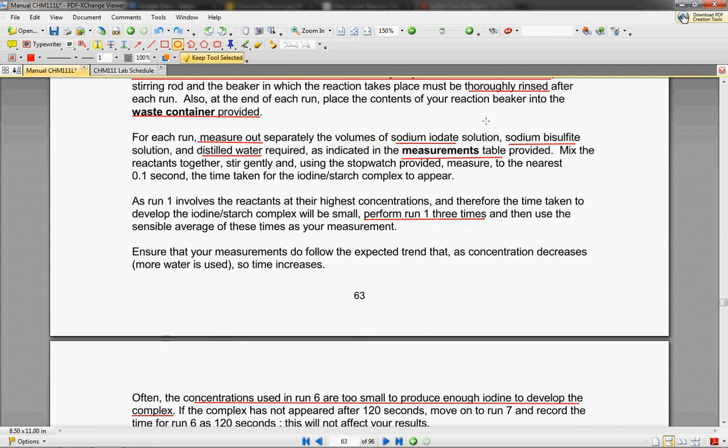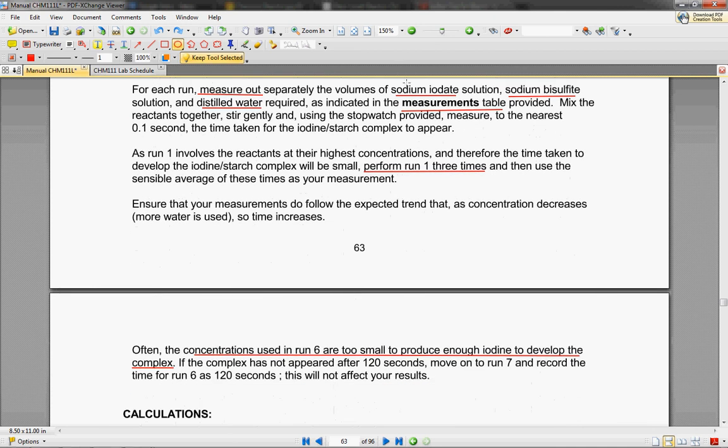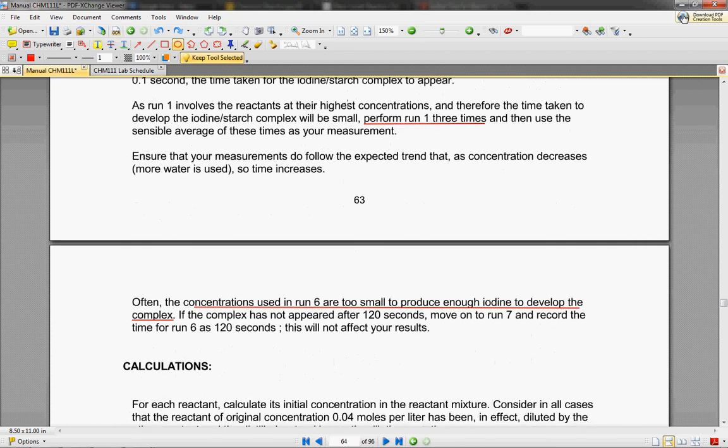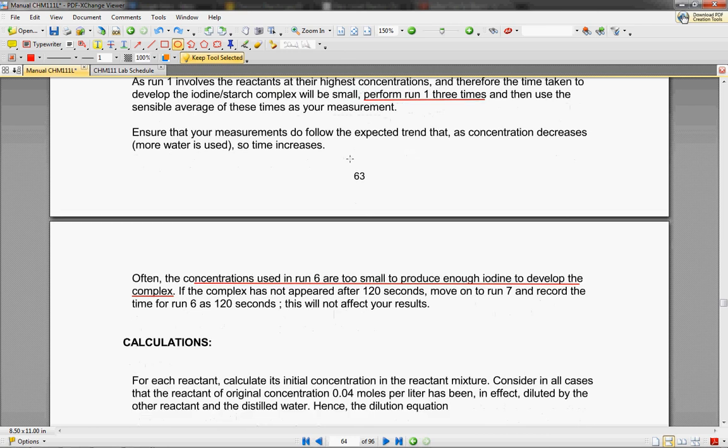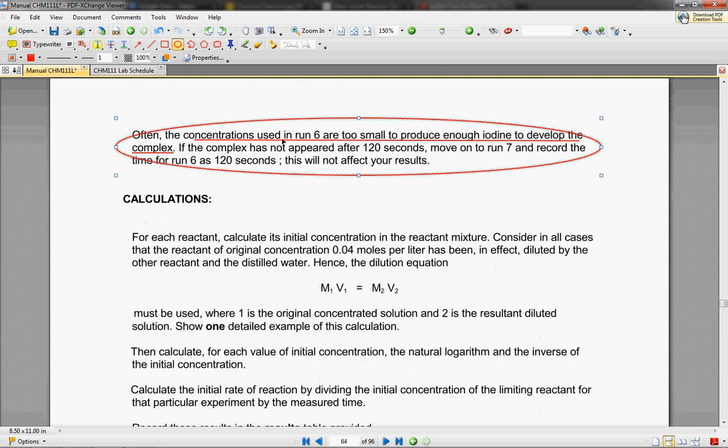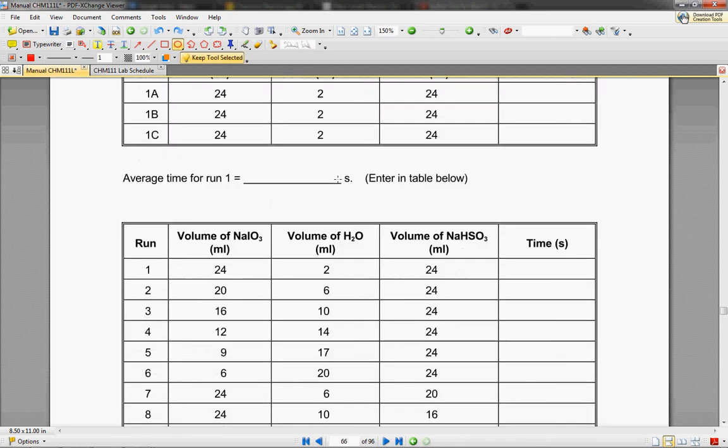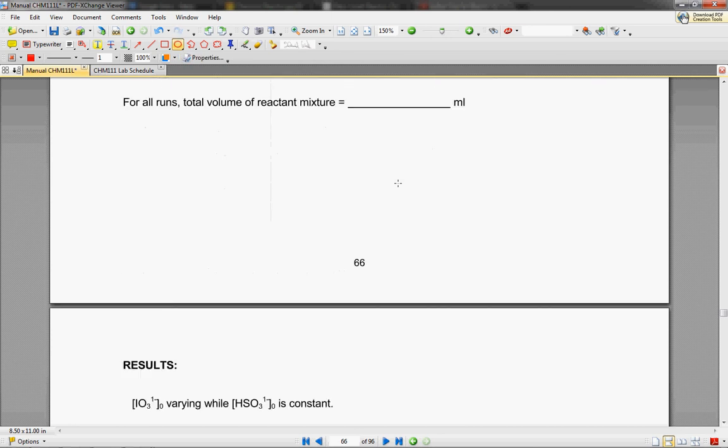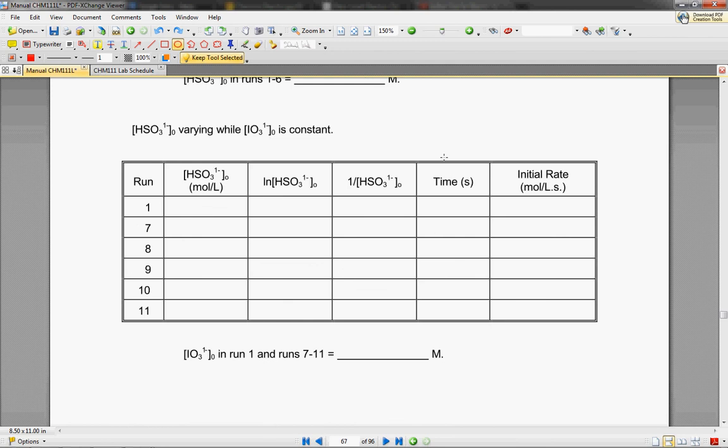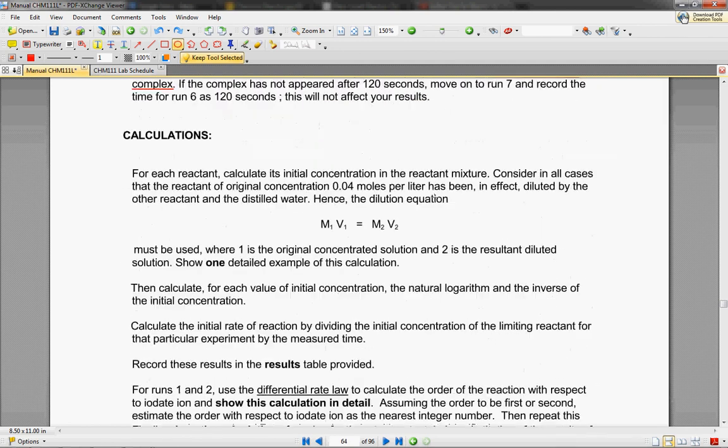We're going to measure out sodium iodate, sodium bisulfate, and distilled water. We're going to measure those as in the table provided at the bottom, and we're going to perform run one three times just because it involves reactants at their highest concentration, so it's going to be kind of hard to get that exact number. There's a note that if you did run six and couldn't get the iodine to develop a complex, then just put in 120 seconds for that run. We're going to mix those and see how much time each took. From that, we should be able to figure out our reaction rates.